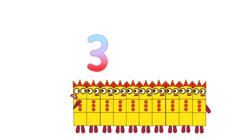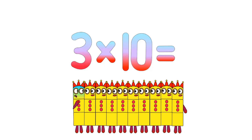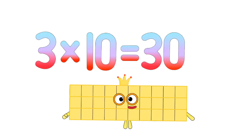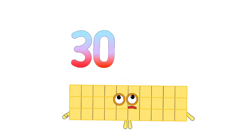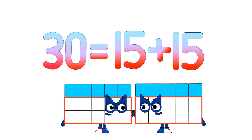Now let's take 10 threes. Since there are 10 threes in total, we write the number 10. 3 times 10 equals 30. Hello, I am 30. Give me back my numberling. 30 equals 2 fifteens.